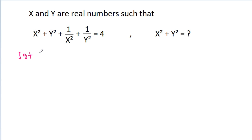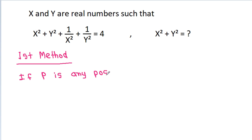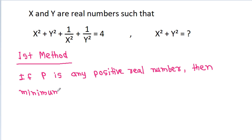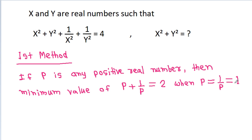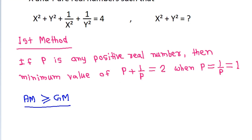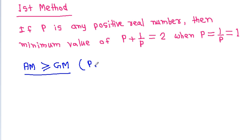So the first method: if p is any positive real number, then the minimum value of p plus 1 by p is equal to 2, when p is equal to 1. We can prove it by using AM greater than or equal to GM in p and 1 by p.